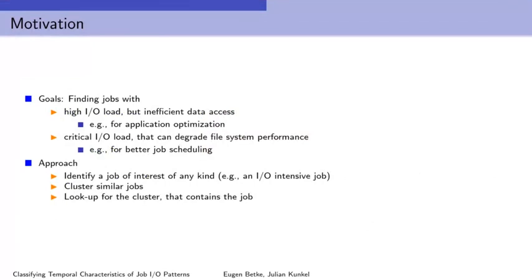One motivation for this project is a high interest in what kinds of jobs are running daily on our system. We are talking about 10,000 jobs a day, so a manual analysis is not feasible. Among the jobs there are many good jobs that use the machine efficiently, but those are not of interest. We want to find jobs that are wasting a lot of resources and can potentially degrade the file system performance. We want to exploit these jobs to find classes of similar jobs.